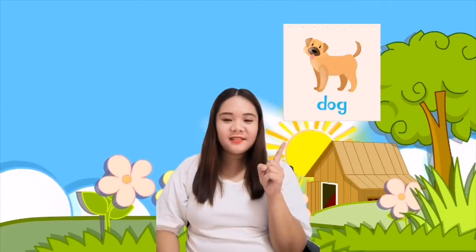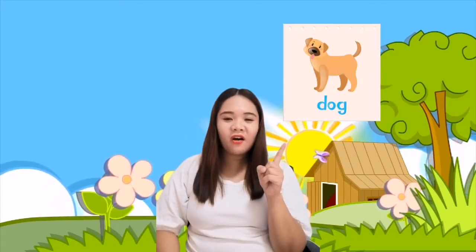Good job, everyone. So for today's lesson, we will be talking about the animals and their young. So let's start with the first animal. Dog. Say dog. Let's spell dog together. Say D-O-G. Dog.